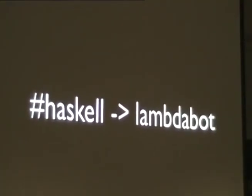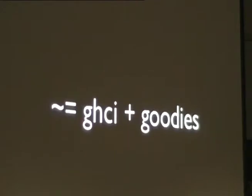The other tool is LambdaBot on the Haskell IRC channel — it's been worked on for maybe 10 years. It's a bit like GHCI with a whole bunch of plugins. Similar to GHCI, you can do `:type` on your function and it'll tell you the type. You can ask for the source of functions in Prelude and it'll spit them out. You can look for kinds, find instances, type classes, and a whole bunch of things like that.